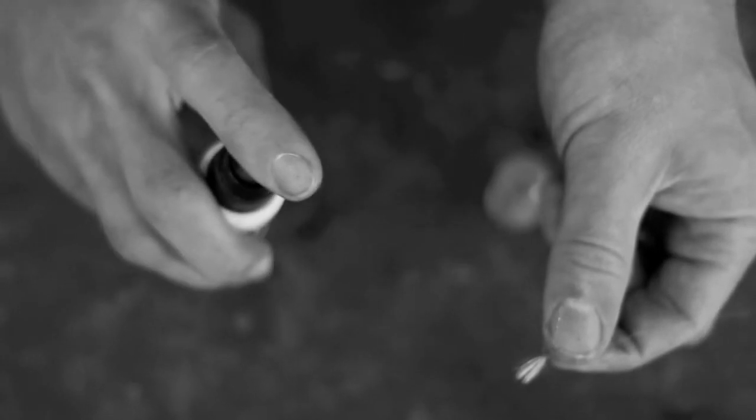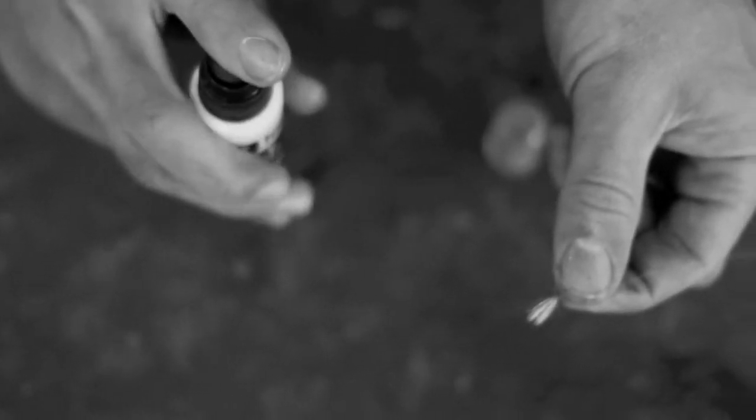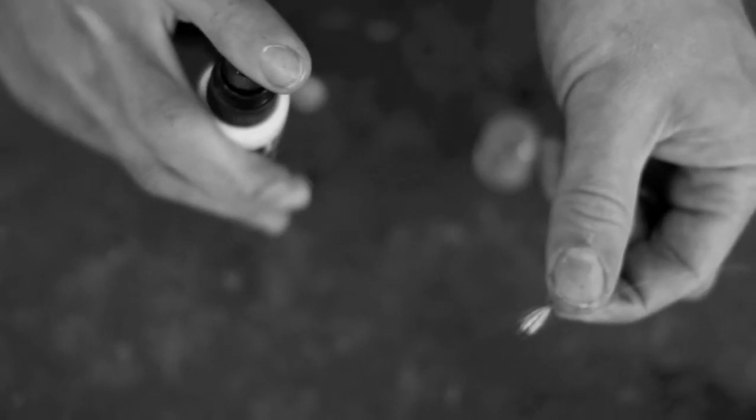While gels create a waterproof barrier around a fly, FlySprits 2 waterproofs the fly itself by soaking into the hair, hackle, and other materials.